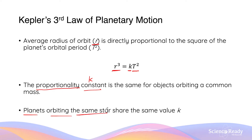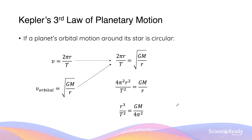Planets orbiting the same star, for example the Sun, will share the same proportionality constant K. We can derive a more thorough equation for Kepler's third law by combining what we know about uniform circular motion and orbital velocity. If we make the simplifying assumption that planets' orbital motion around the star is circular, then we can say that the velocity of the planet equals the circumference of the circle, 2πr, divided by the period. The orbital velocity formula can also be expressed as the square root of GM over r. When a planet orbits the star in circular motion, these two velocities are equal, allowing us to equate them mathematically.